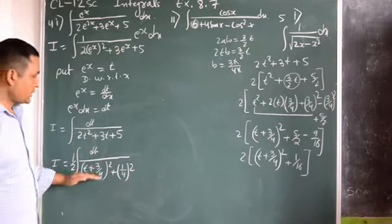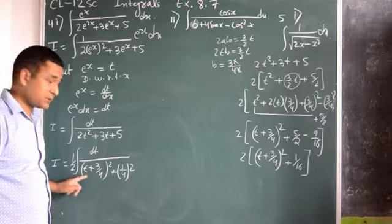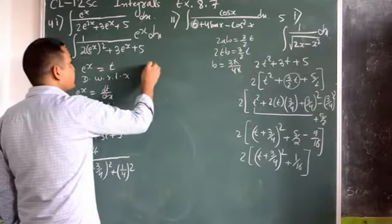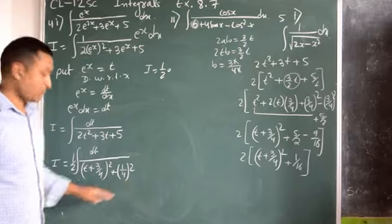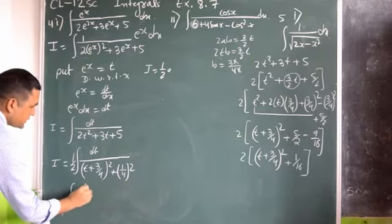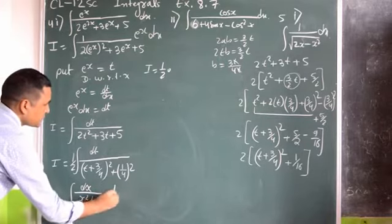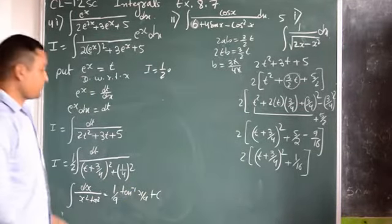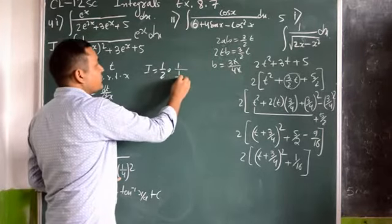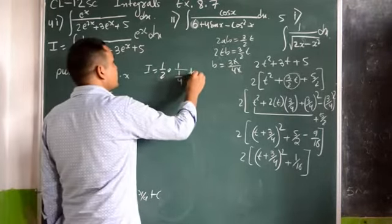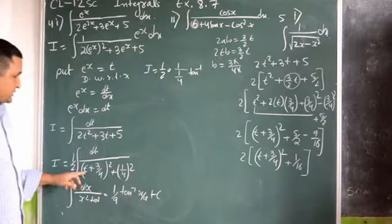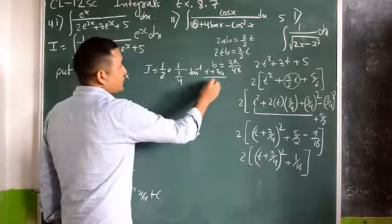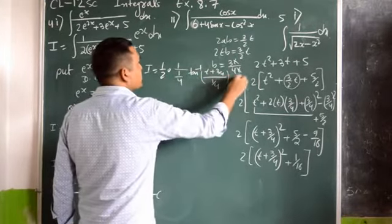Now the formula is: the integral of dx divided by (x^2 + a^2) equals (1/a)·tan⁻¹(x/a) + C. Applying this formula here: with a = 1/4, the answer is (1/2)·(1/(1/4))·tan⁻¹[(t + 3/4)/(1/4)] + C. The 1/(1/4) brings 4 to the numerator. So I equals 2·tan⁻¹(4t + 3) + C.